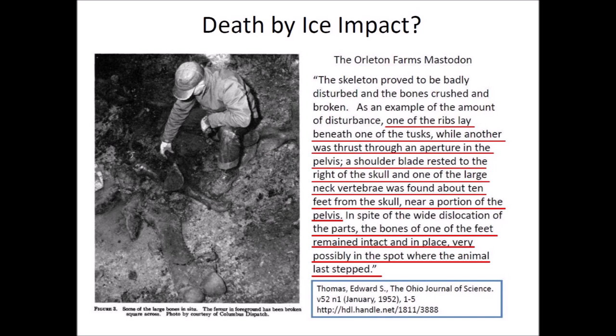The Orleton Farms Mastodon, found in Ohio, may have been a victim of such a barrage. One of the ribs lay beneath one of the tusks while another was thrust to an aperture in the pelvis. A shoulder blade rested to the right of the skull, and one of the large neck vertebrae was found about 10 feet from the skull near a portion of the pelvis. Yet the bones of one of the feet remained intact and in place — very possibly in the spot where the animal last stepped.